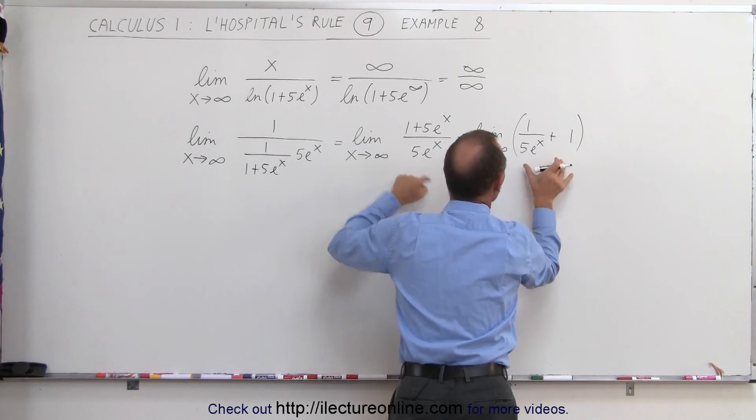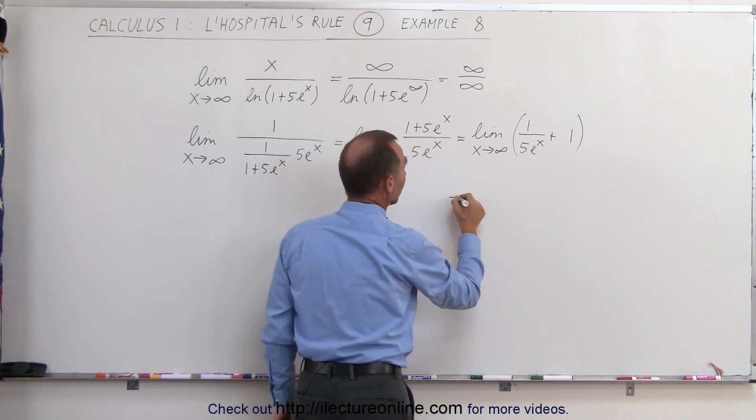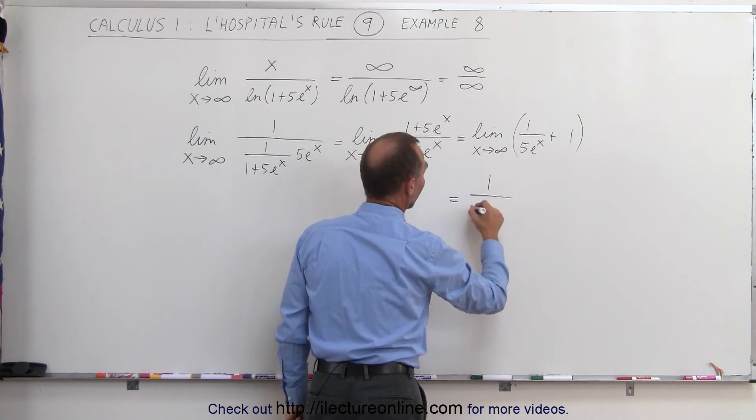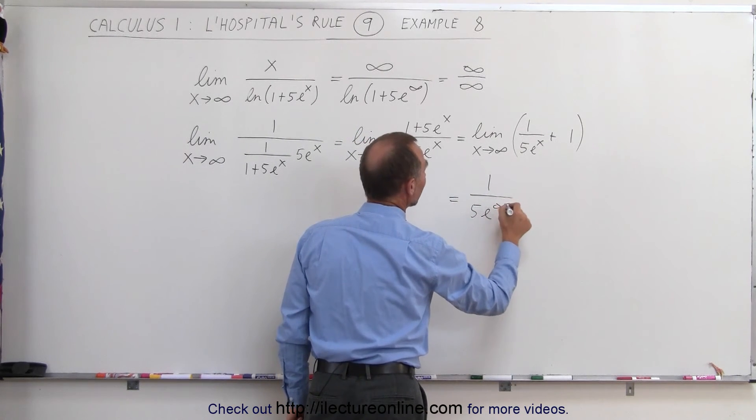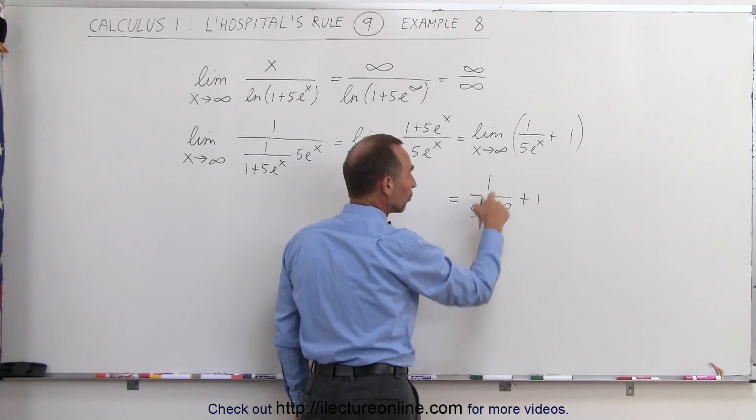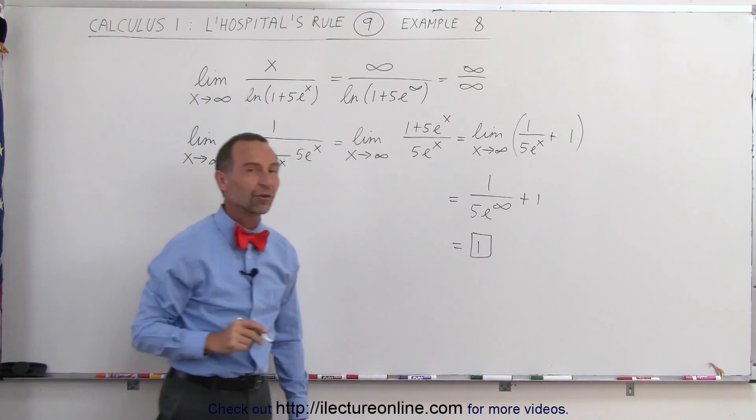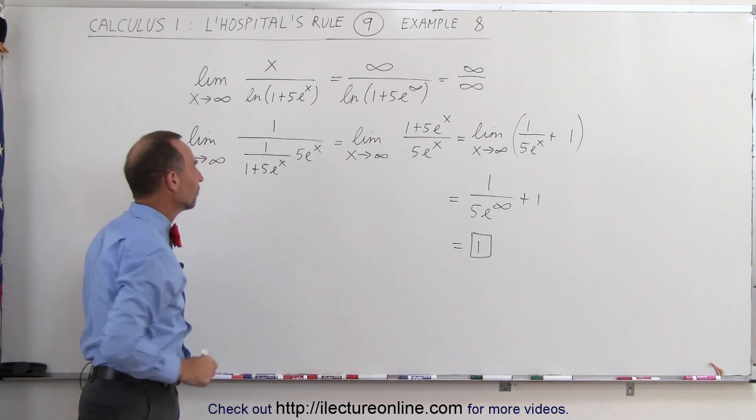Taking the limit of this function, now we can go ahead and plug in that limit and see what we get. This is equal to 1 divided by 5e to the x plus 1. Of course, this becomes 0 because 1 over infinity is 0. This becomes equal to 1. The limit of this function is 1 when x approaches infinity.